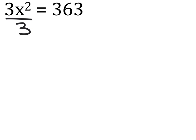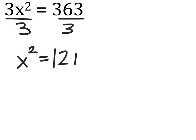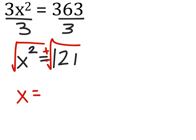So we'll have to divide both sides by three, giving us x squared equals 121. Then we must square root both sides, which will give us a positive and negative answer: x equals 11 and negative 11.